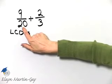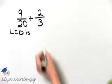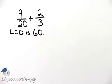Sixty is a multiple of twenty, and sixty is also a multiple of three. Three divides into it, so that's our LCD.